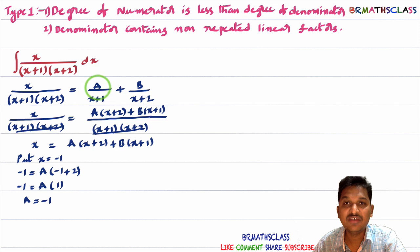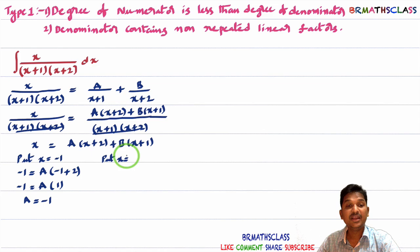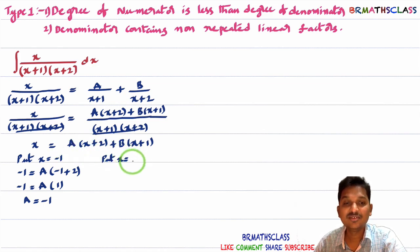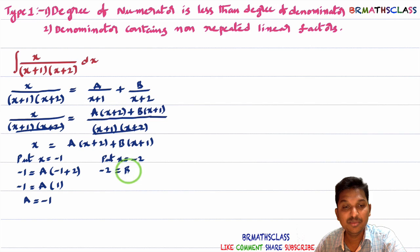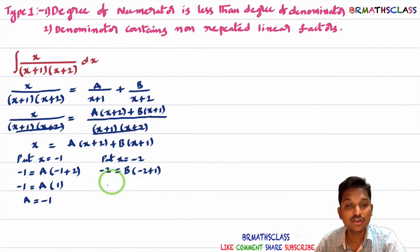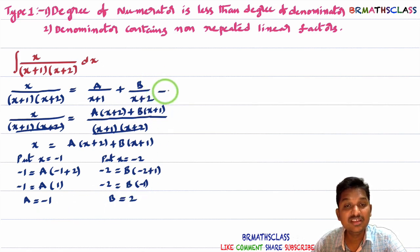We have found A = -1. Now to find B, I want to make the A term zero. By taking x = -2, (-2+2) = 0, so the A term vanishes. Substituting x = -2: -2 = B(-2+1) = B(-1), so B = 2.